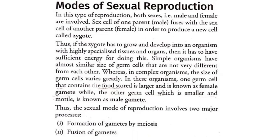In complex organisms, one germ cell that contains the food stored is larger. The food stored is larger and is known as the female gamete. So the female gamete is larger in size, and in that, food is stored.